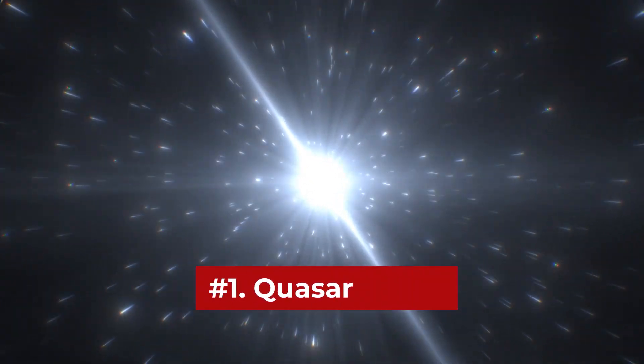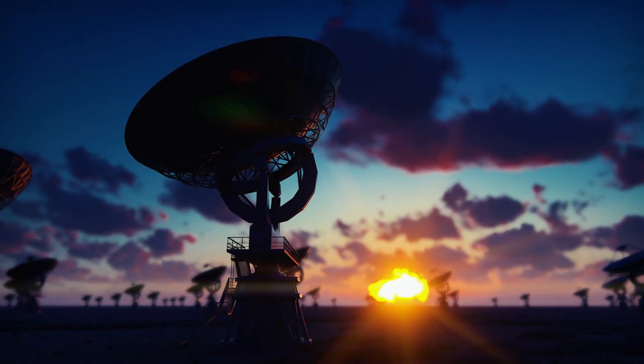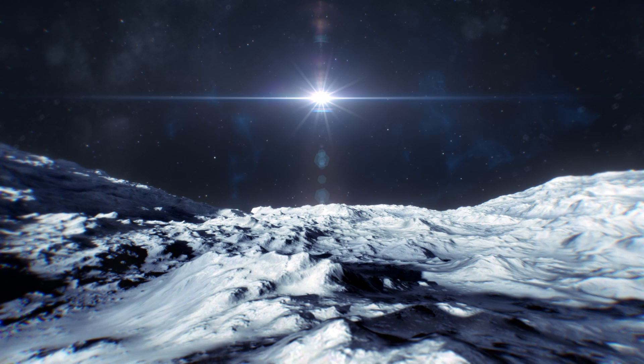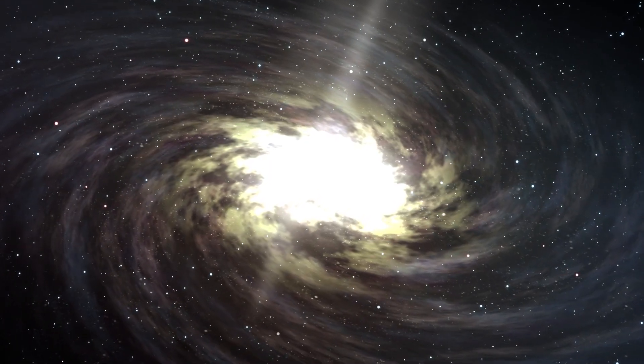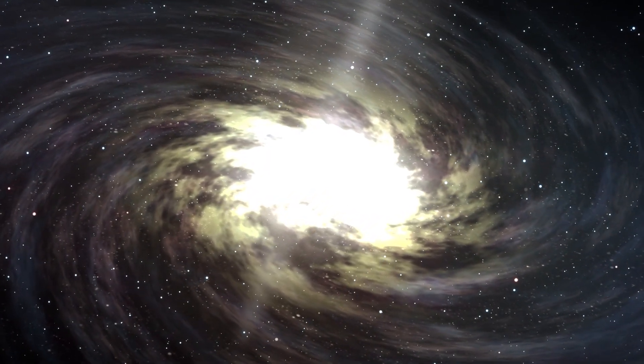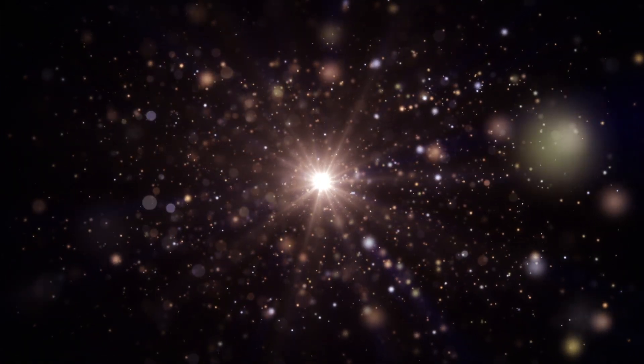Number 1: Quasar. Quasars were first noticed during the 1950s. They were initially thought to be stars. Now we know that quasars are primitive galaxies situated billions of light years away from Earth. Quasars are so immense that their mass is equivalent to billions of suns.